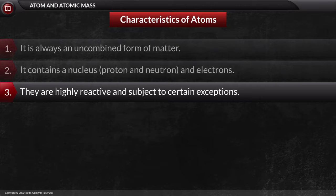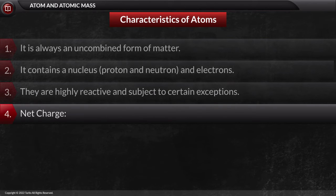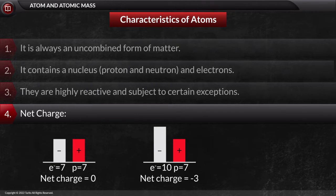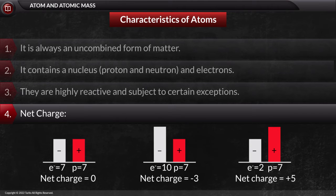The net charge of an atom is always zero. But when it is converted into ions, based on the number of electrons and protons, the charge will be determined. If electrons are more, it will acquire a negative charge, while if the proton count is more, it will acquire a positive charge.